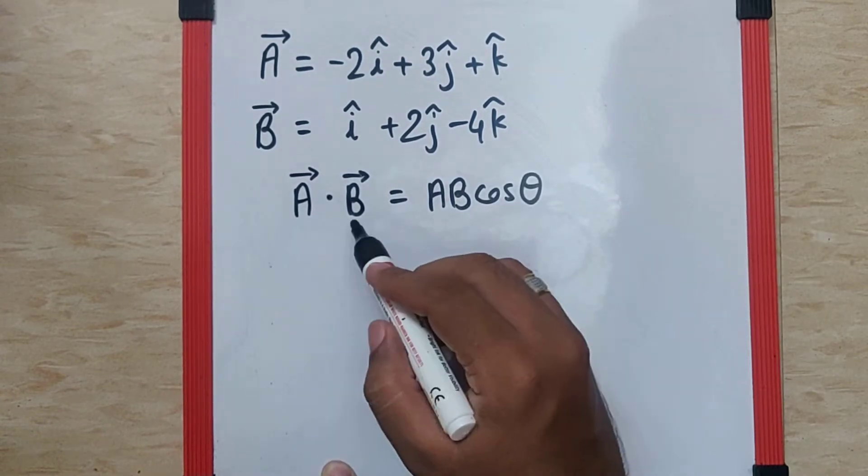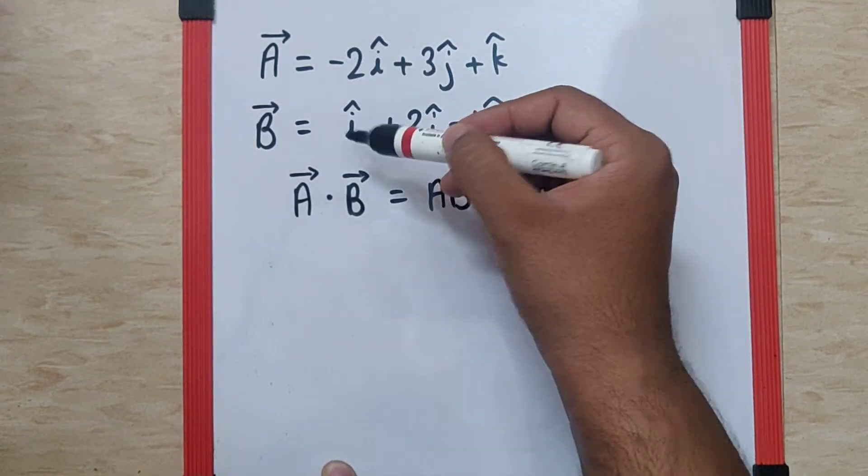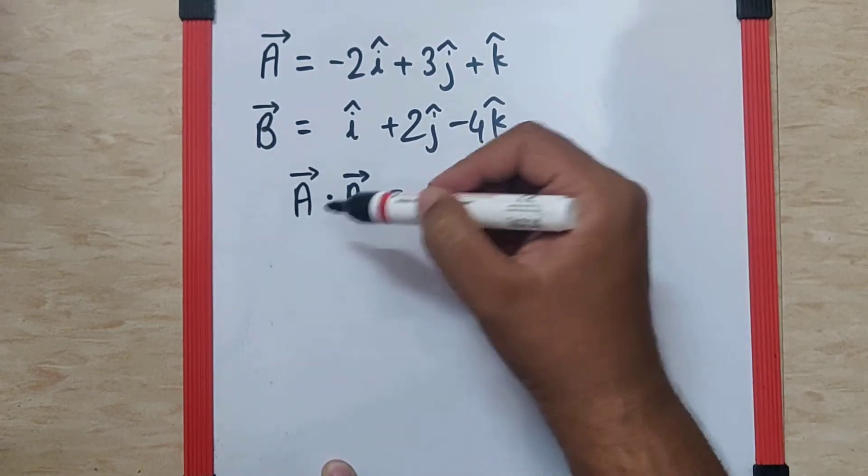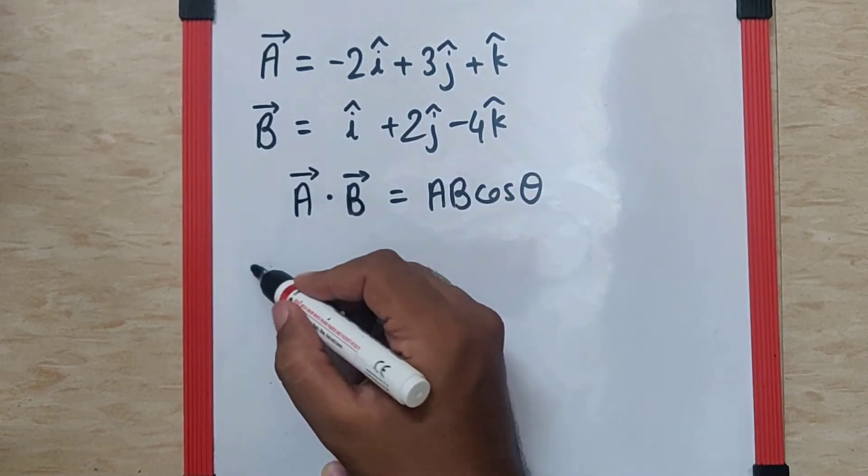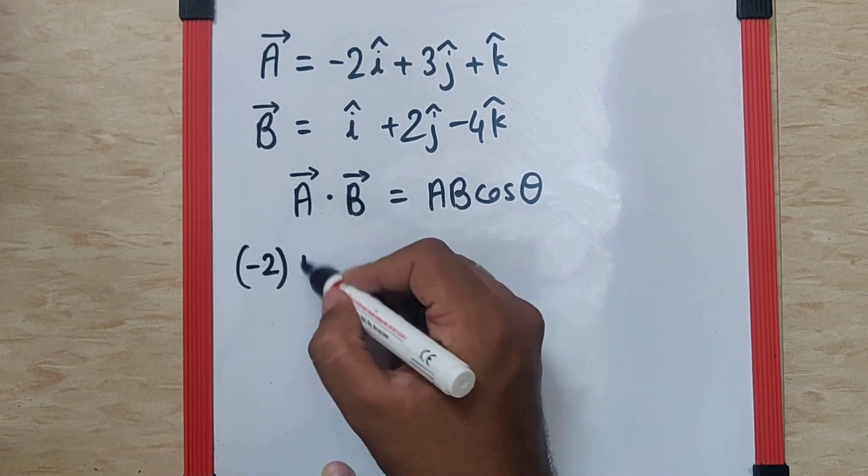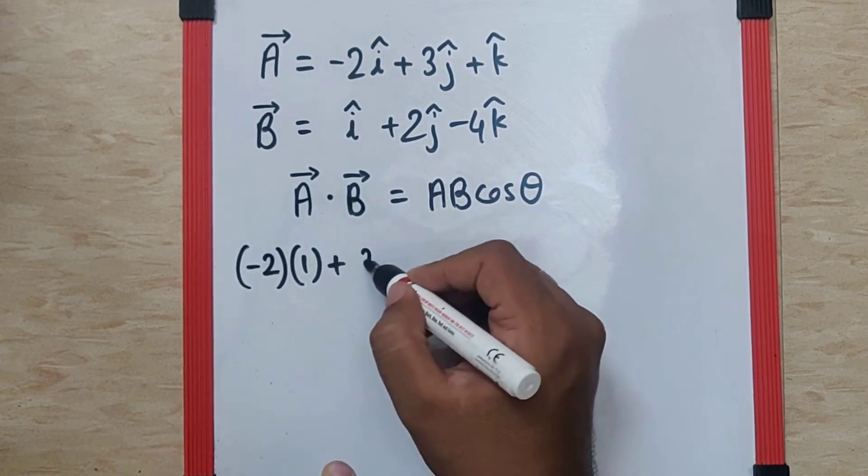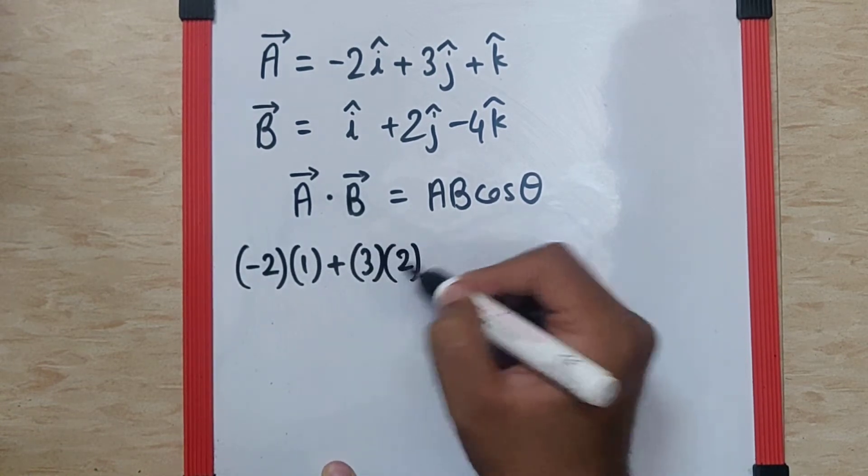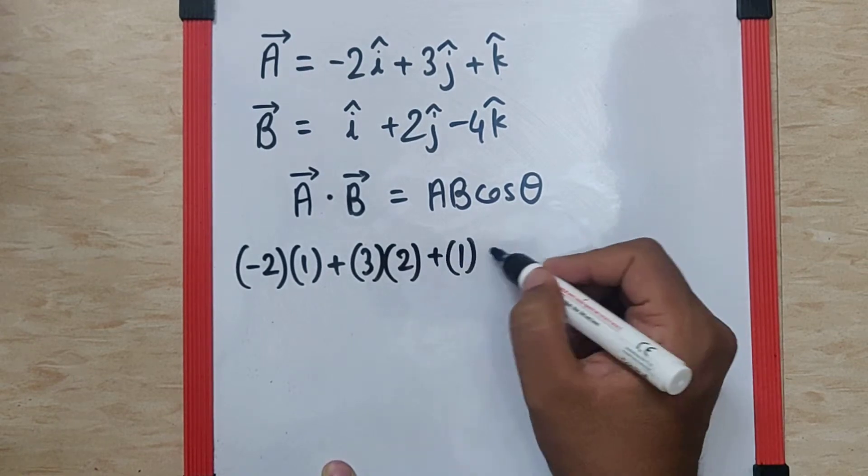Now, A bar dot B bar is actually ax bx plus ay by plus az bz. So, let's multiply them and see what we get. It will be minus 2 into 1 plus 3 into 2 plus 1 into minus 4.